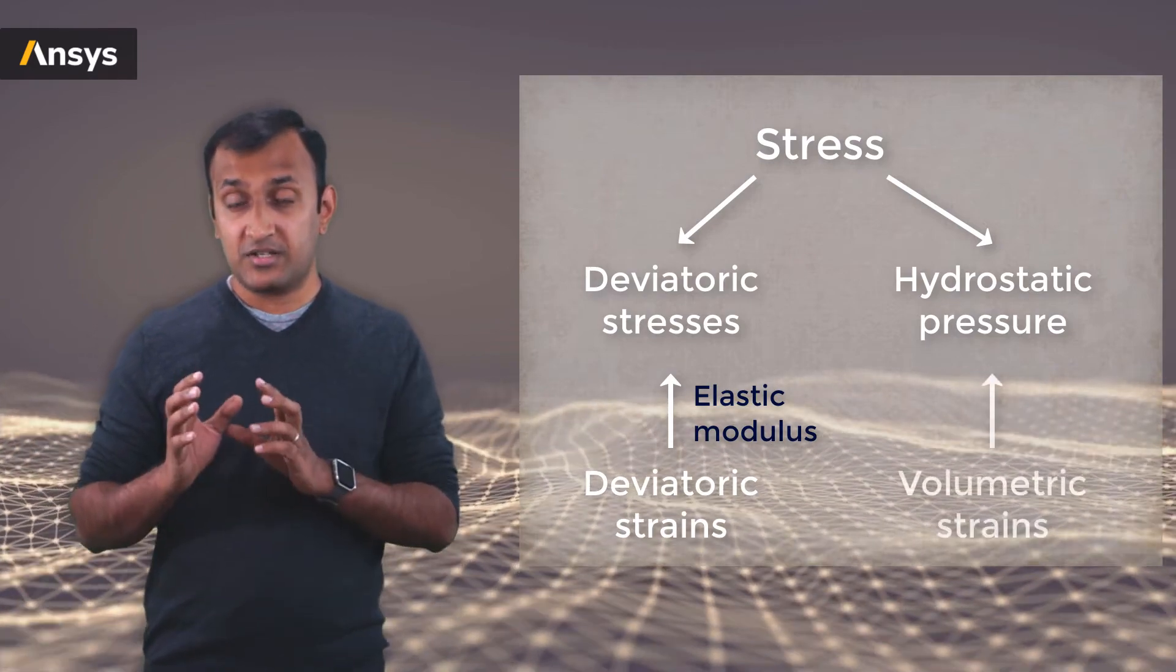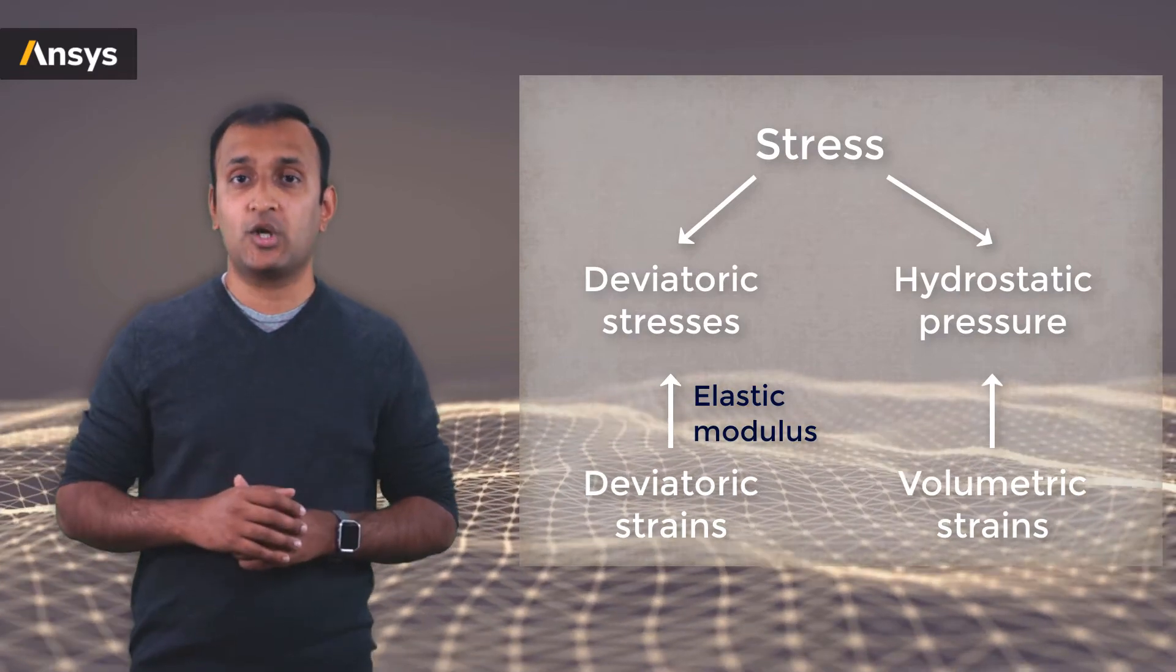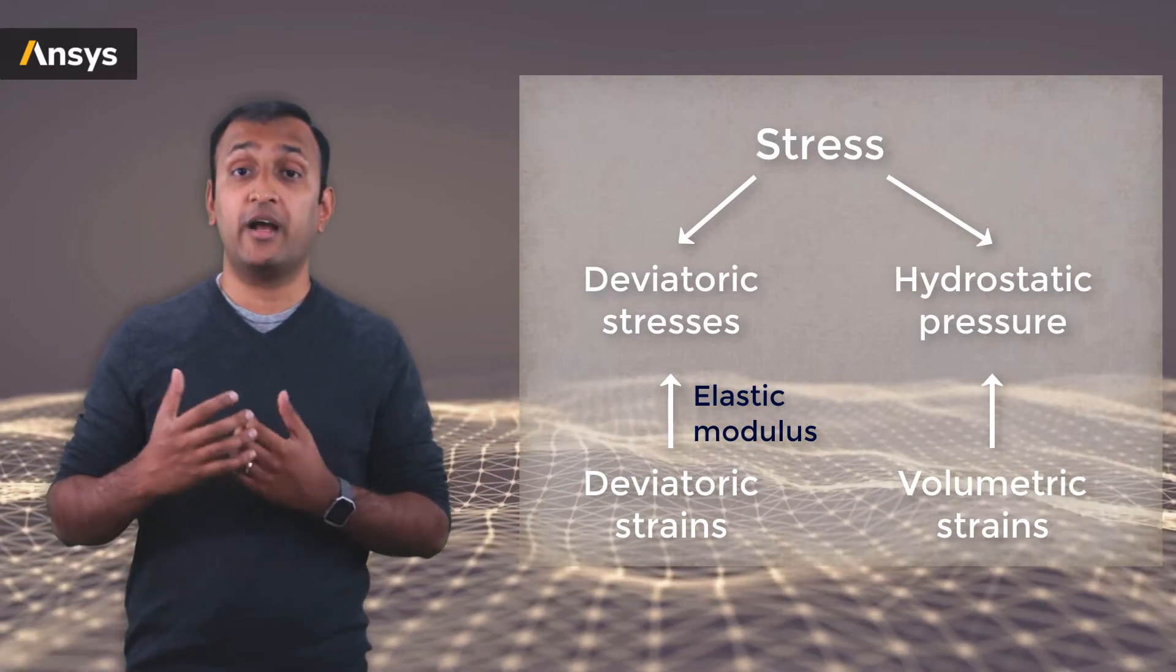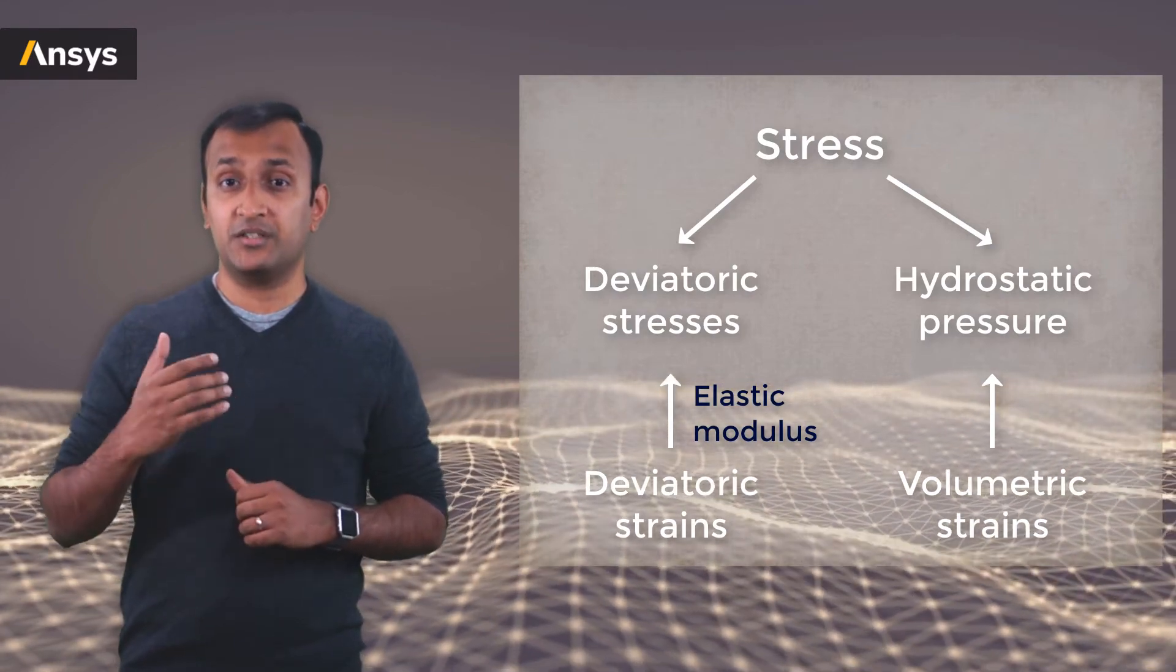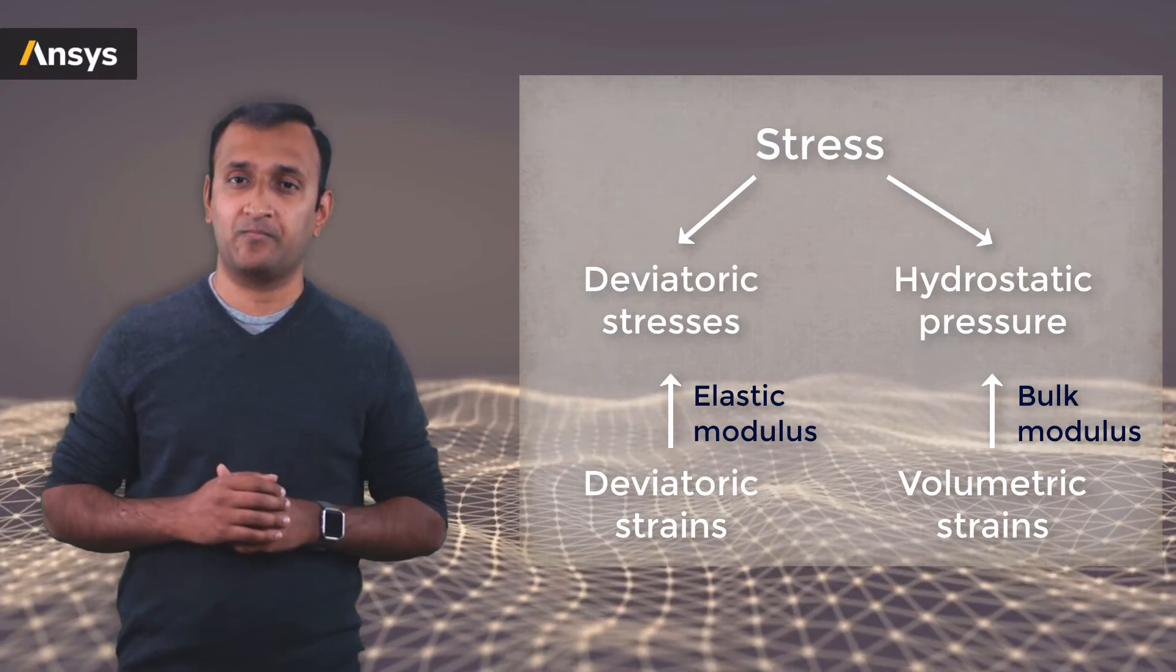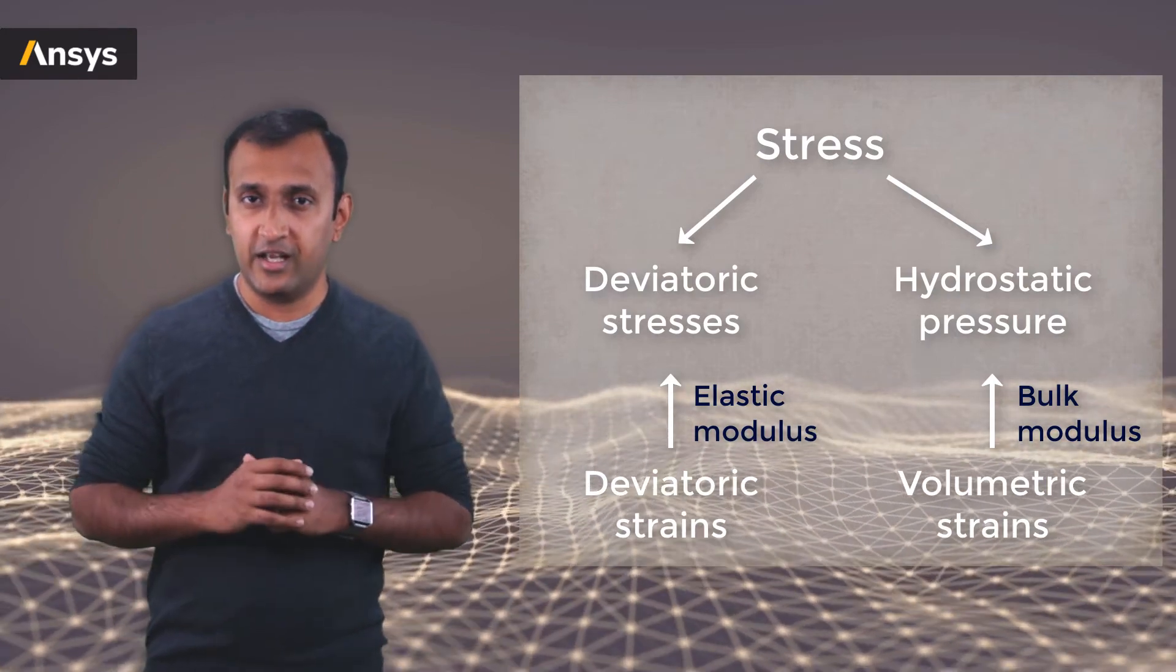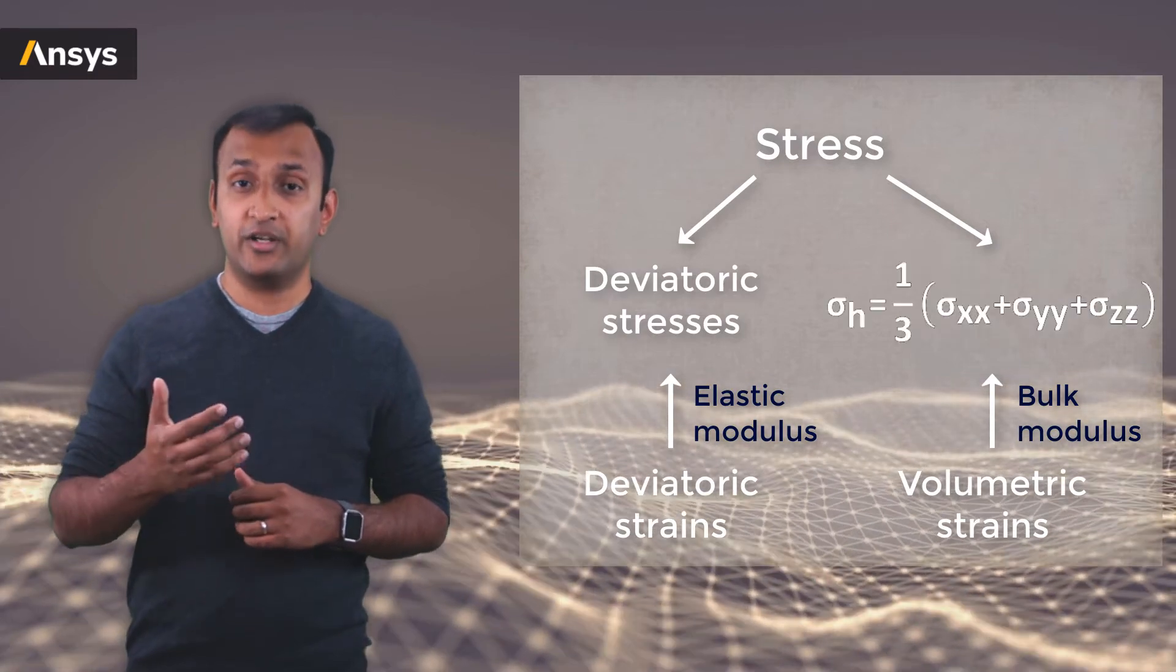Similarly, the stresses developed in the body due to any change in volume is called volumetric stress or hydrostatic pressure. The ability of the material to resist volumetric strain is the bulk modulus. Mathematically, it is the average of the three principal deviatoric stresses.